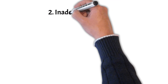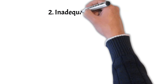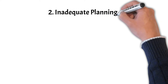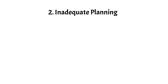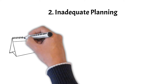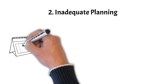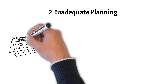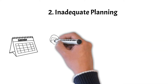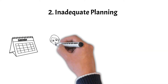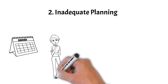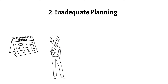Pitfall 2: Inadequate planning. Up next is inadequate planning, a common pitfall that can sabotage even the most promising projects. Without a comprehensive project plan, teams may struggle to map out the necessary tasks, allocate resources effectively, and establish realistic timelines. This lack of planning can lead to confusion among team members, delays in project progress, and wasted efforts.